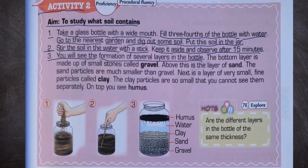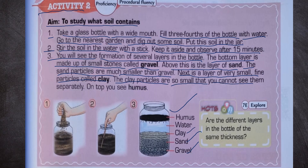The bottom layer is made up of small stones called gravel. Above this is a layer of sand — the sand particles are much smaller than gravel. Next is a layer of very small fine particles called clay; the clay particles are so small you cannot see them separately. On top you see humus. In the picture we can see the three steps: putting soil in water, stirring it, and observing the different layers.